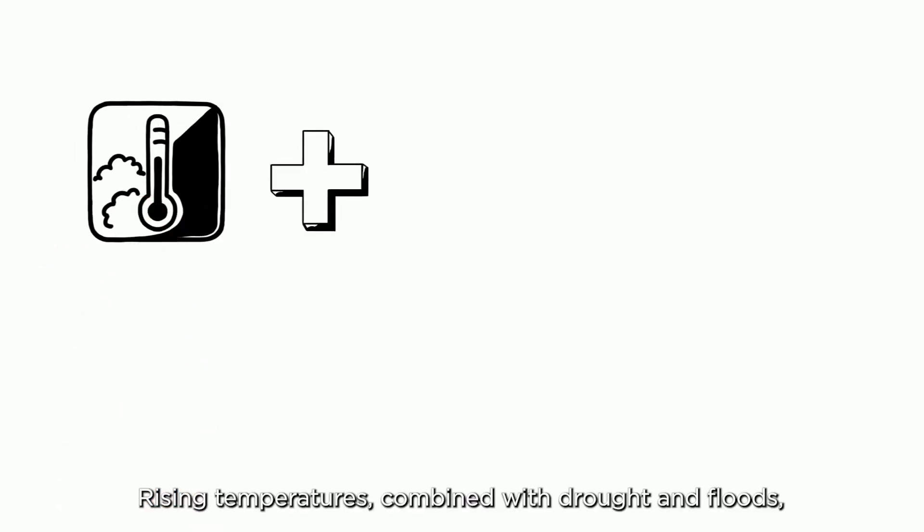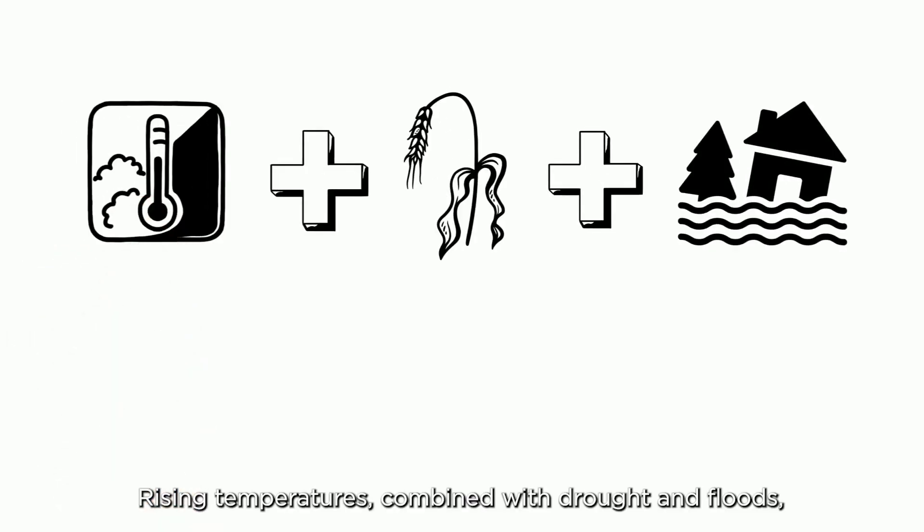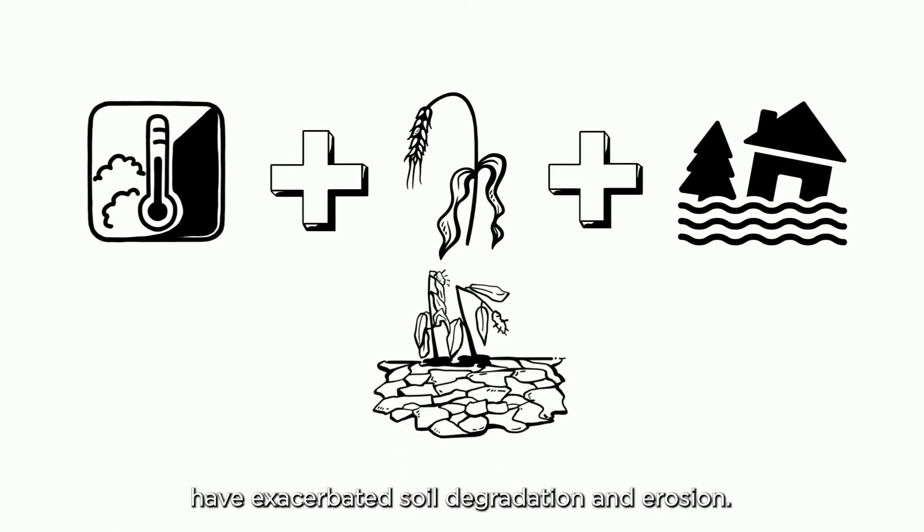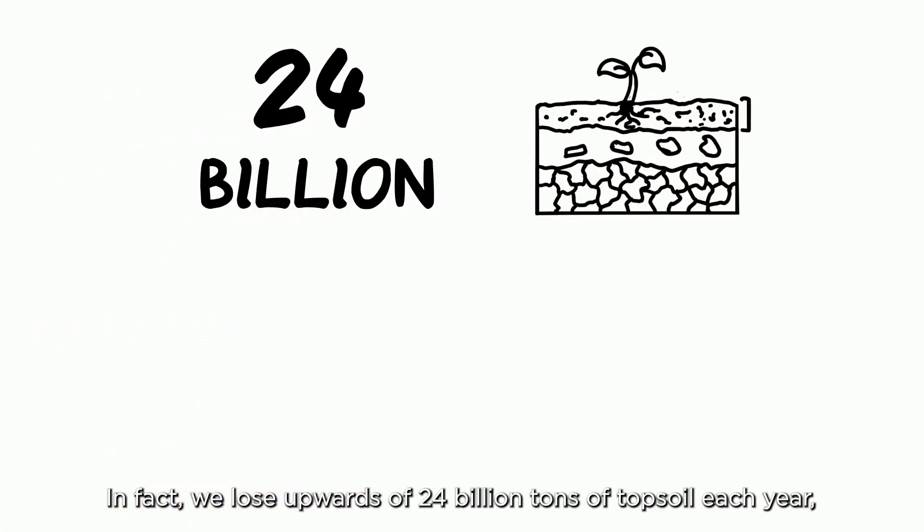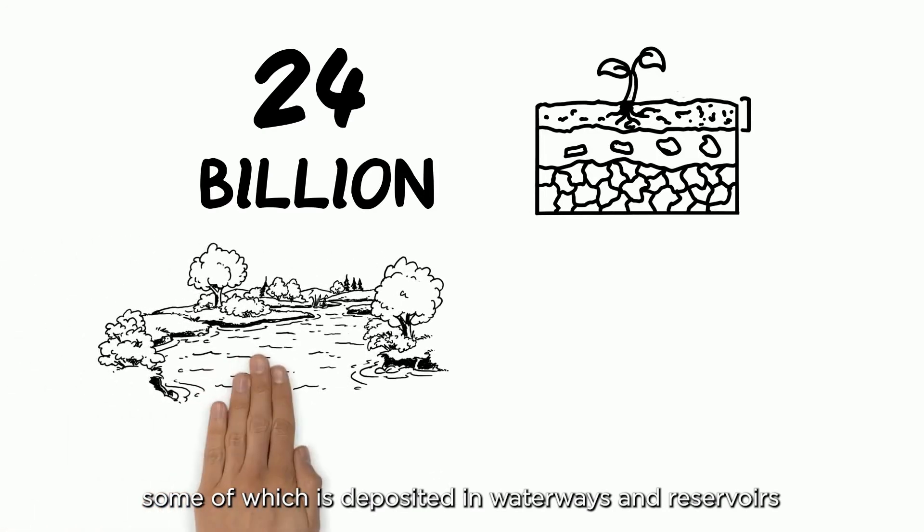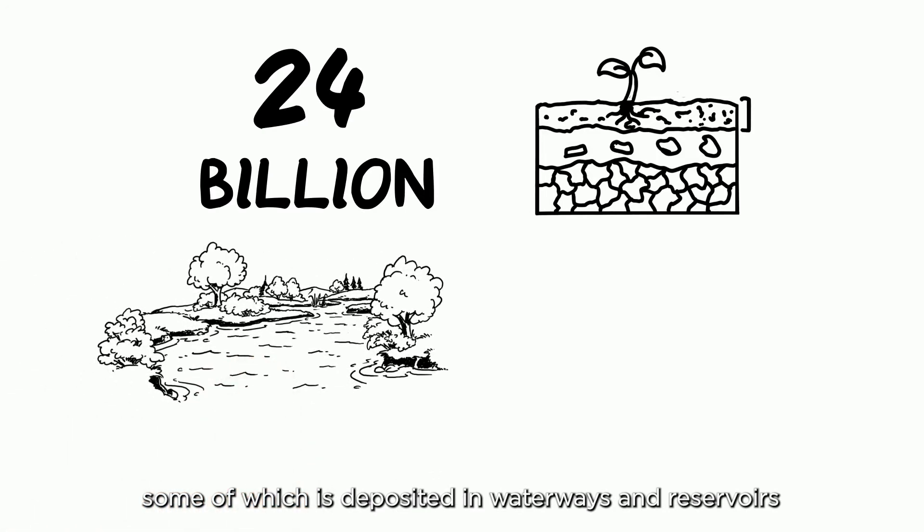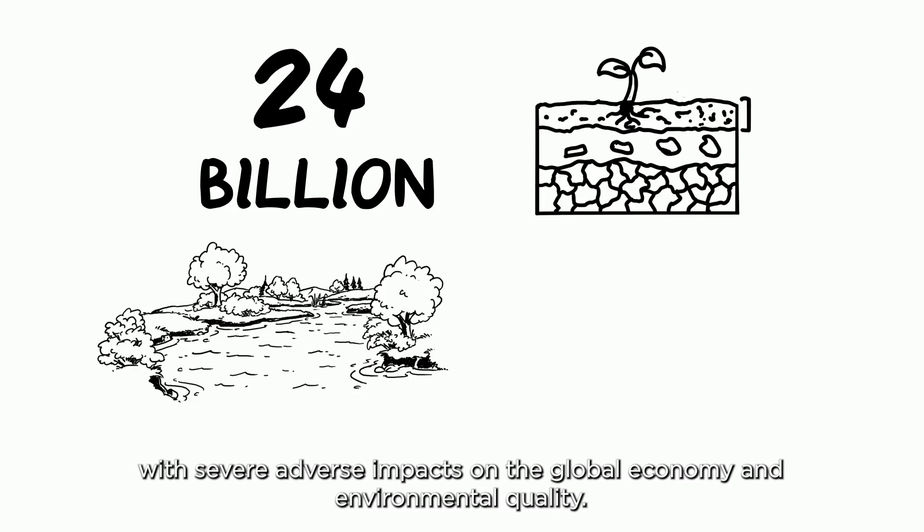Rising temperatures combined with drought and floods have exacerbated soil degradation and erosion. In fact, we lose upwards of 24 billion tonnes of topsoil each year, some of which is deposited in waterways and reservoirs with severe adverse impacts on the global economy and environmental quality.